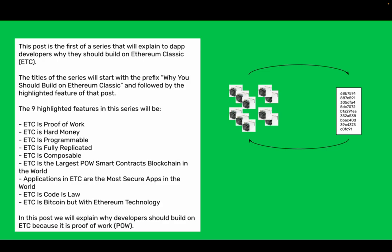The nine highlighted features in this series will be: ETC's Proof of Work, ETC's Hard Money, ETC is Programmable, ETC is Fully Replicated, ETC is Composable, ETC is the largest Proof of Work Smart Contracts blockchain in the world, Applications in ETC are the most secure apps in the world, ETC is Code is Law, and ETC is Bitcoin but with Ethereum technology.